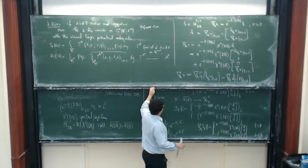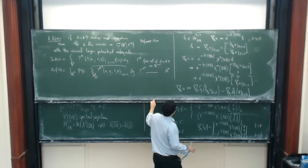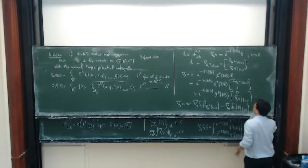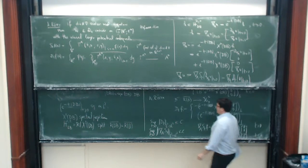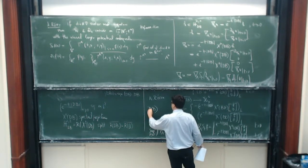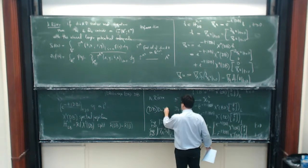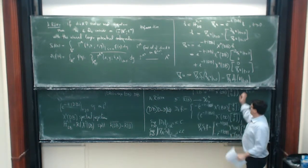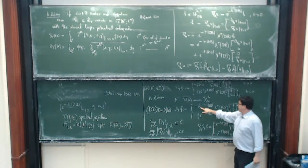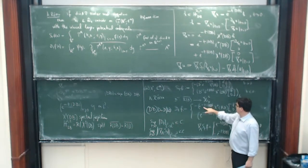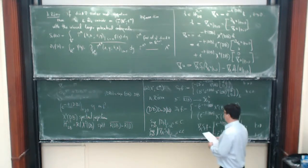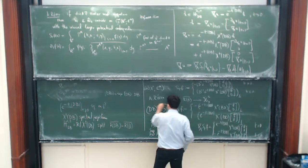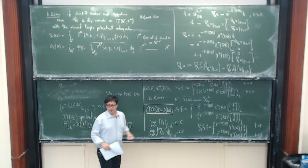Let me mention a rule of thumb when computing with DB and BD: DB times D is equal to D times BD. Whenever you apply D to this operator on the left, you can move D inside, BD becomes DB, and D goes outside. This rule works exactly on the functional calculus — and maybe this is integration by parts.